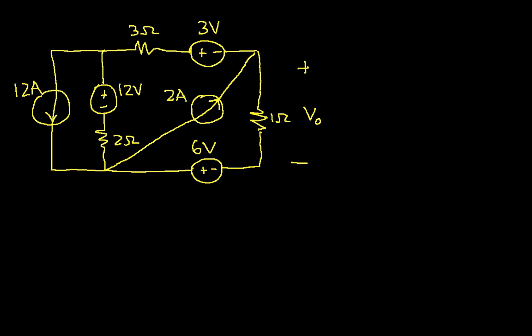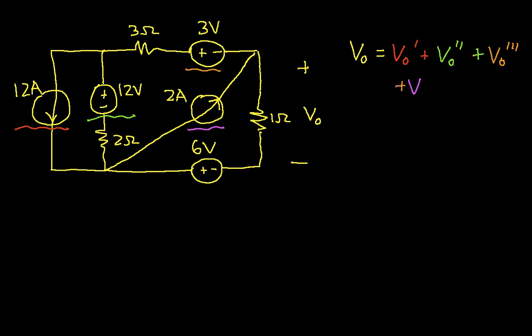If you'll remember, the idea behind superposition is that the voltage V0 that I'm interested in is equal to the voltage due to this current source, which I might call V0 prime, plus the voltage due to this voltage source, which I might call V0 double prime, plus the voltage due to this voltage source, which I might call V0 triple prime, plus the voltage due to this current source, which I might call V0 quadruple prime, and finally plus the voltage due to this voltage source, which I could call V0 quintuple prime.